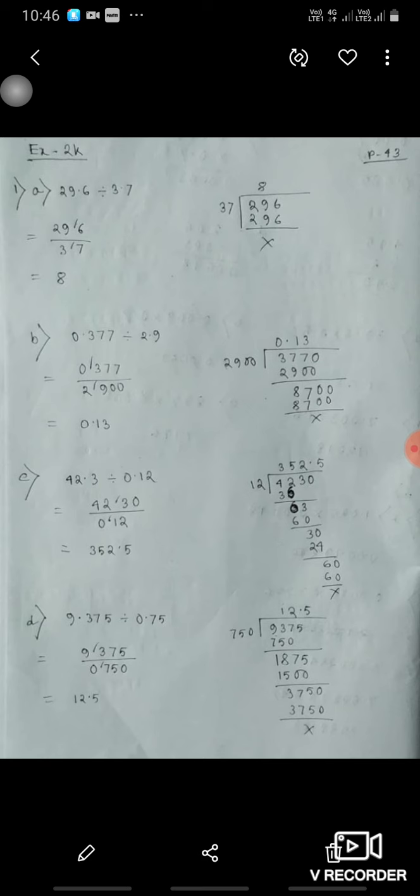Then the part 9.375 divided by 0.75. So see, here when you will remove decimal, the downside it will become 750 and above it will become 9,375. Now you will divide it, so you will get 12.5.